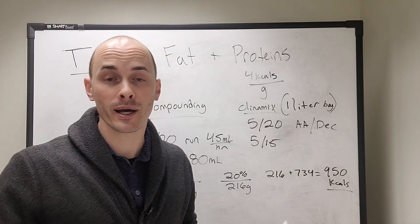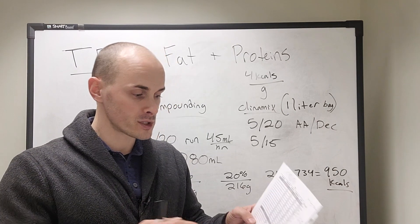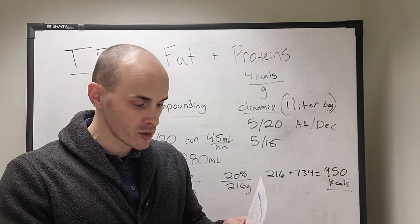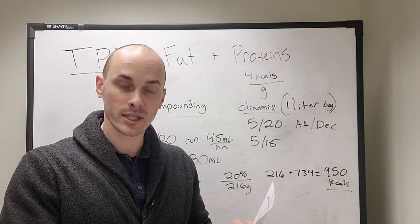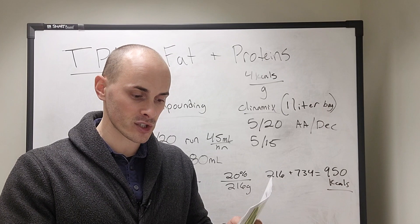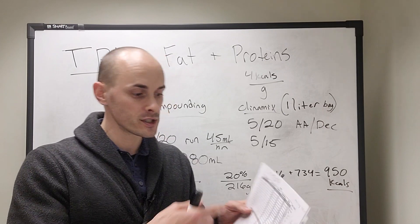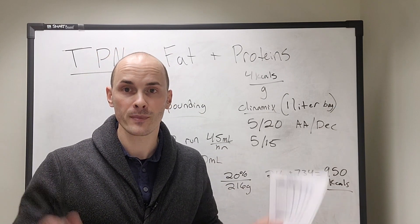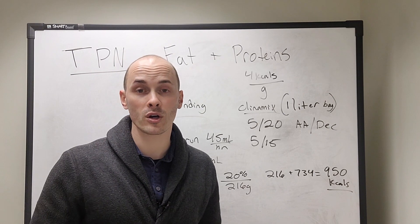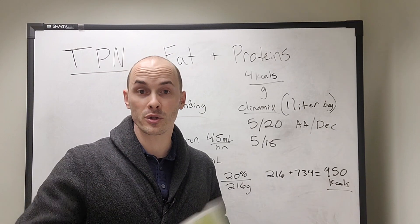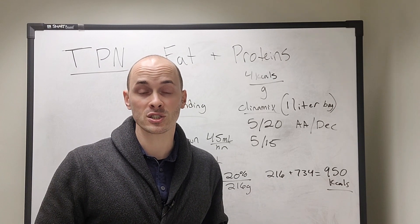So I'll do another video here, an example video where we actually work backwards. So here I can look and say, okay, 515 solution running at 75 mils an hour will provide 90 grams of protein, 270 grams of dextrose, which is 1,278 kcals. So this gives you all the information that you might need. So I hope that makes sense. I'm going to do another example video, and then we're going to go into example patients and do the math and show you how I figure out TPN calculations for my patients.